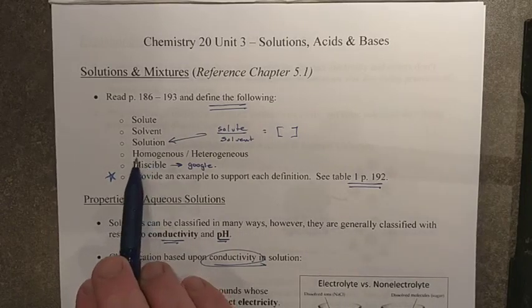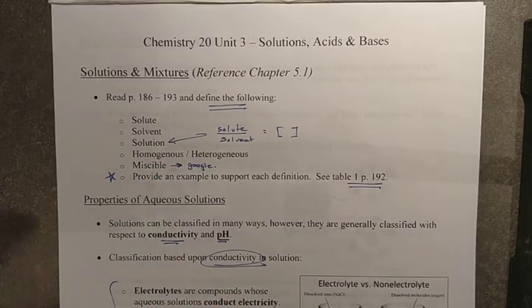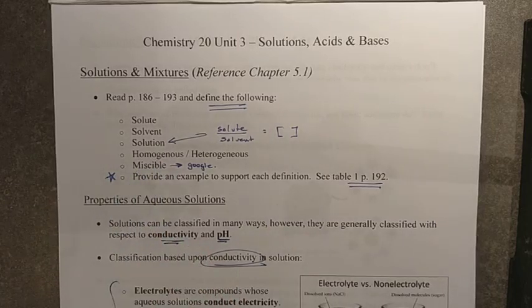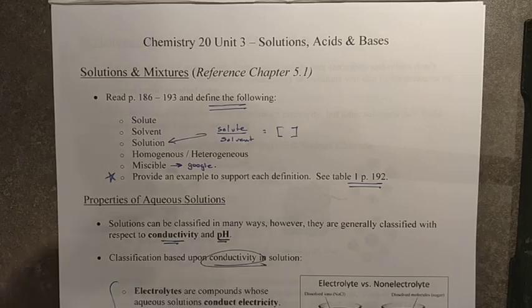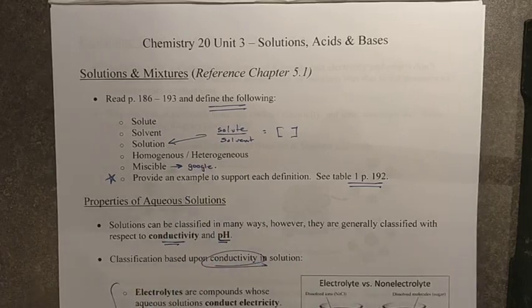Homogeneous. Remember the Latin prefix homo just means the same. So homogeneous solution would be something that looks the same throughout. You wouldn't be able to identify the different parts. Heterogeneous. Hetero means different. And so a heterogeneous solution, you'd be able to see the different parts within it.